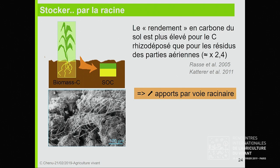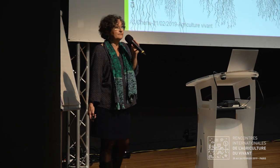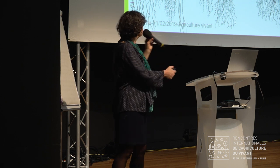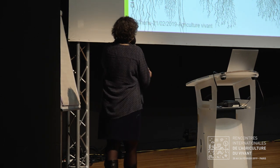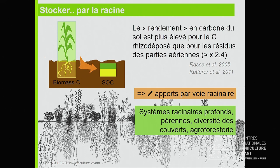Conclusion : il faut augmenter les apports par voie racinaire. Comment ? En essayant de privilégier des systèmes racinaires profonds — la sélection variétale n'est pas du tout orientée dans ce sens-là, mais il y a peut-être un levier d'action à mobiliser. C'est privilégier les pérennes, les cultures pérennes, donc un enracinement permanent. C'est favoriser la diversité des plantes : si on diversifie les plantes, on va diversifier les systèmes racinaires, donc peut-être explorer beaucoup mieux le sol qu'avec un seul type de système racinaire. Et bien sûr, implanter de l'agroforesterie pour aller explorer les sols en profondeur.